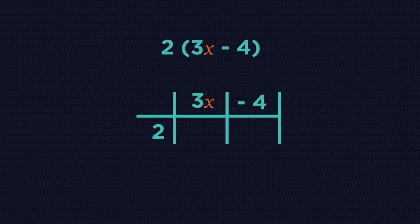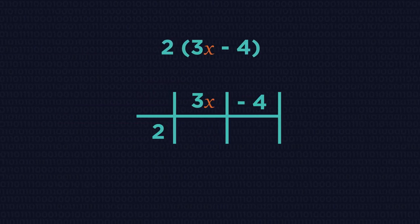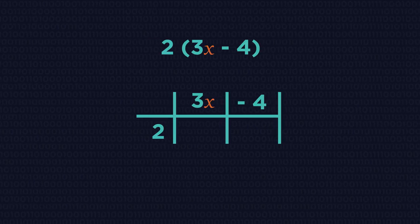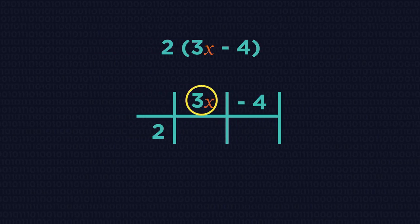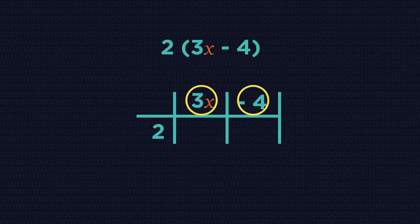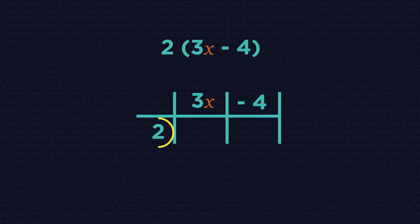Some of you may prefer to write the question out in a grid to make sure that you don't miss out on any parts. So the 3x and the negative 4 go here, and whatever is outside the bracket goes here.